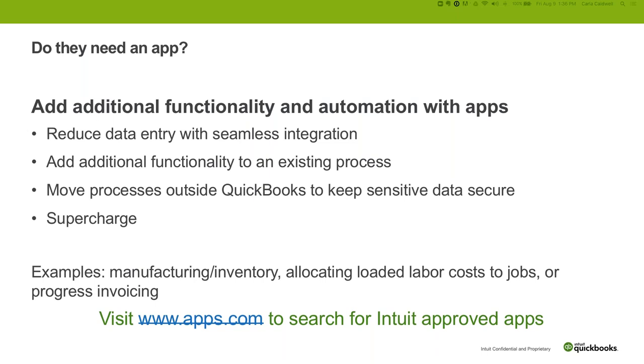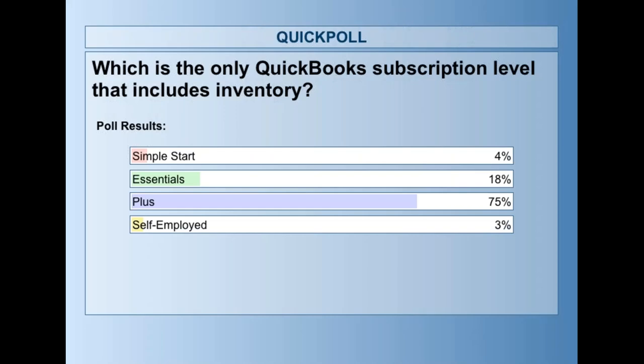The answer is: which QuickBooks subscription level includes inventory? The answer is QuickBooks Online Plus. Simple Start is just like that brand new business, mostly dealing with sales. Essentials graduates up and starts doing a little bit more of the payables side. I kind of think of it as: Simple Start is sales, Essentials adds in more payables functionality. QBO Plus is really going to add in a lot of functionality — class tracking, location tracking, and inventory. QuickBooks Online Self-Employed is not meant for anybody that has a balance sheet, where inventory is sitting on the balance sheet. QBO Advanced includes everything in Plus and then some.